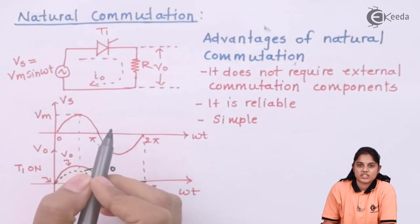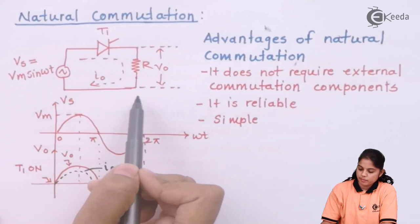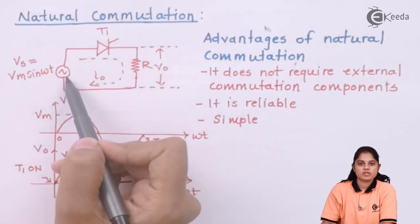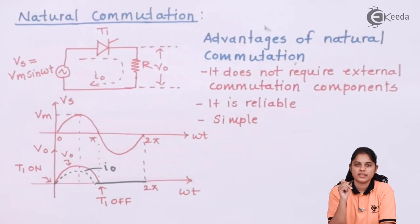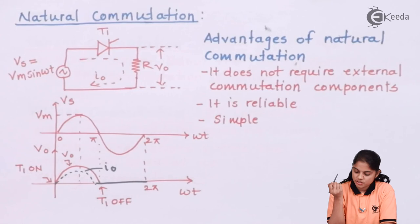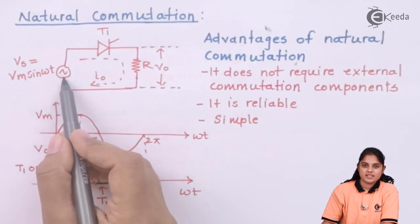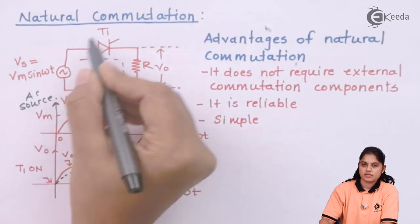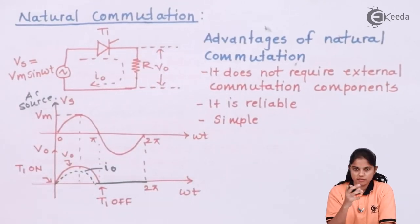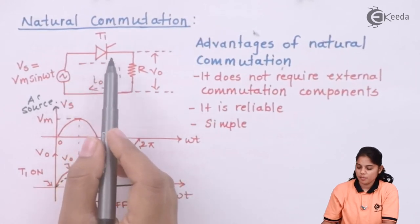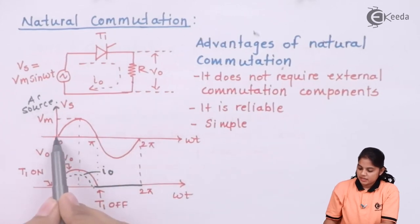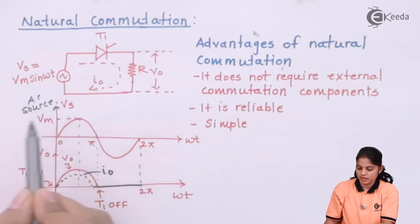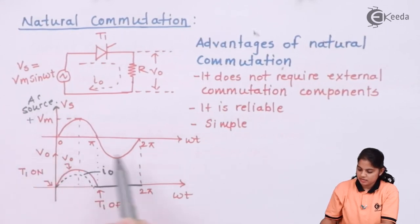For natural commutation, I have shown a simple diagram. This is the SCR, the load connected is a resistive load, and the source applied is an AC source. Whenever an AC source is connected to the SCR, the SCR can be commutated naturally. The input voltage supply is Vm sin(ωt). The amplitude of the positive cycle will be plus Vm and the amplitude of the negative cycle will be minus Vm.